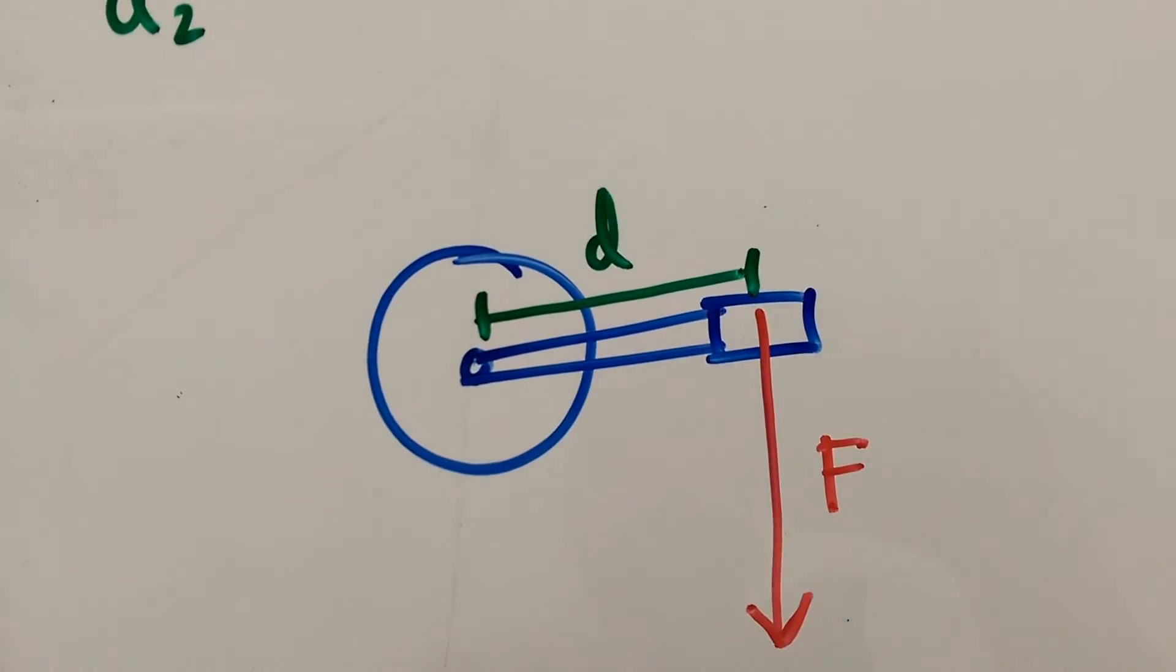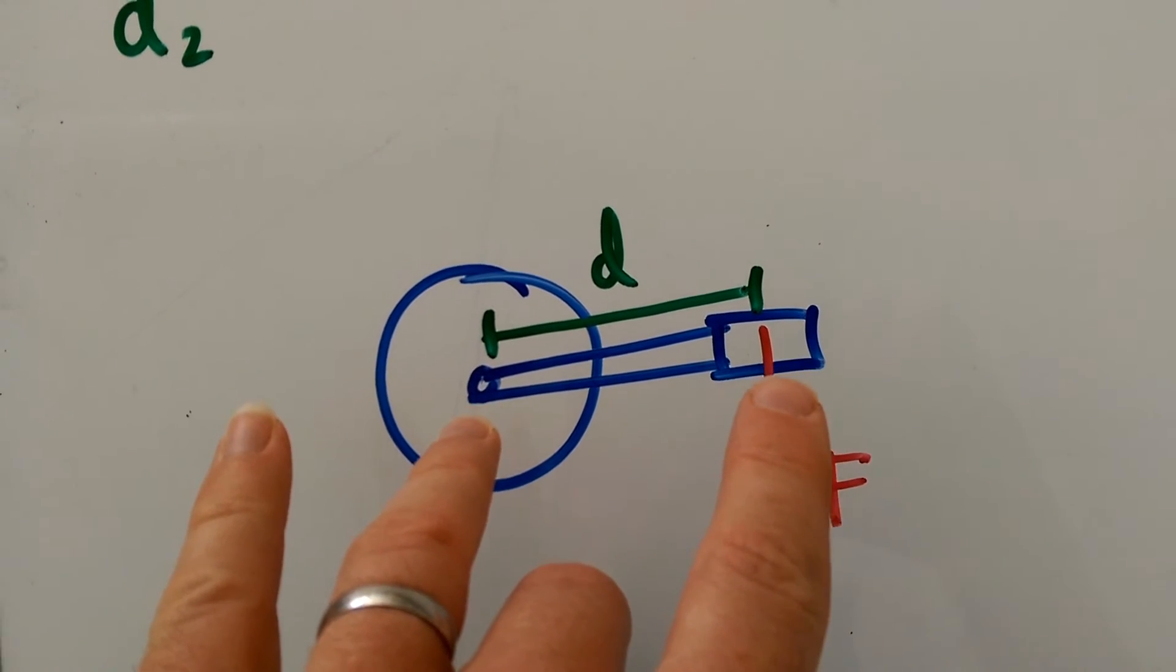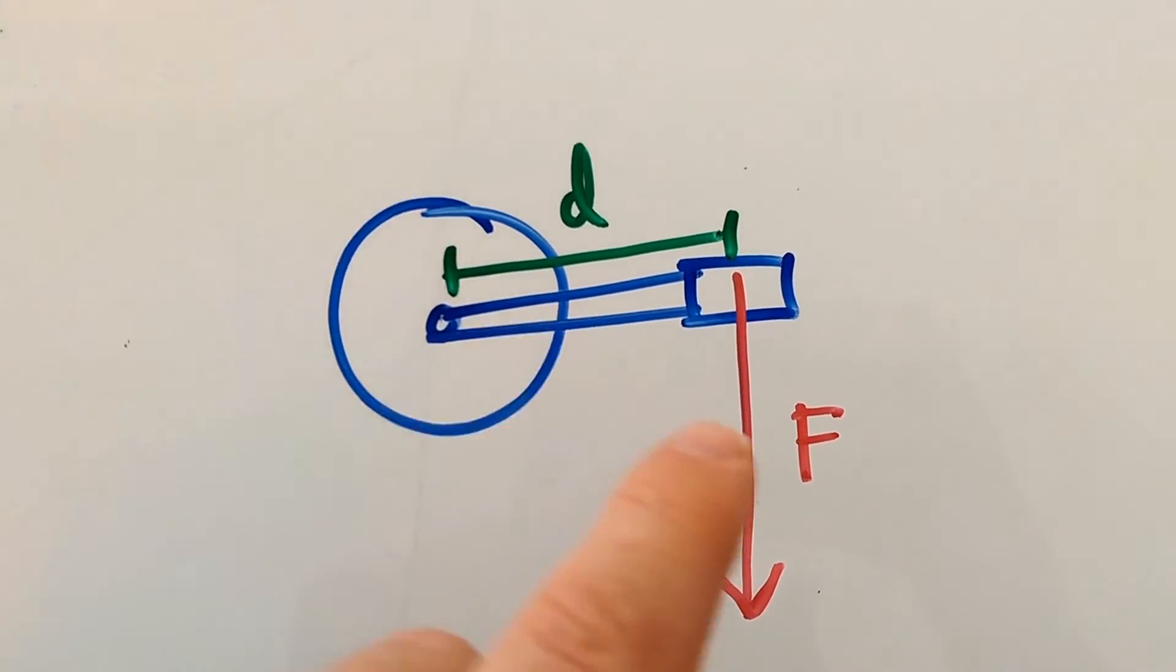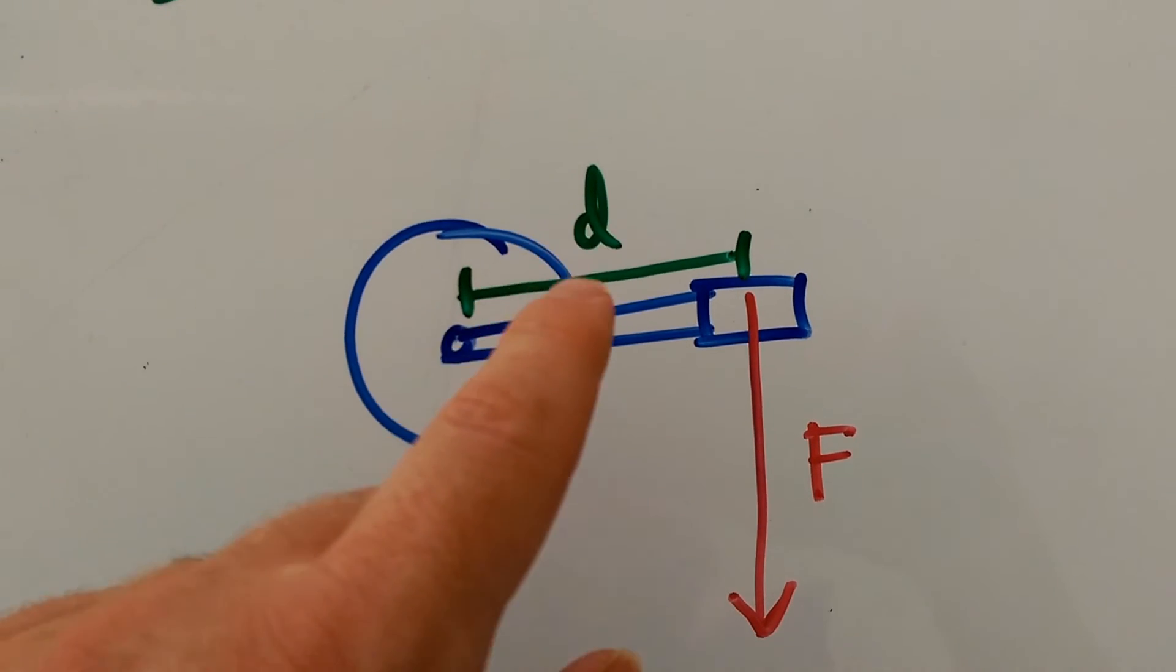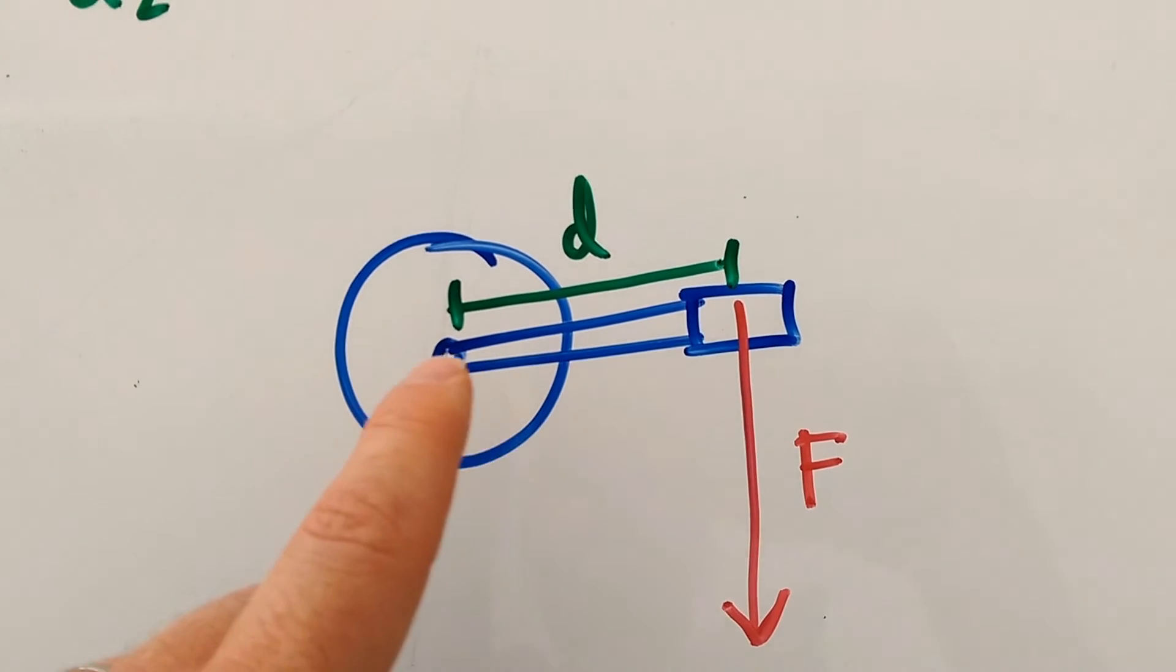The force is straight down on the pedal, and this is where the moment is going to be greatest, because a moment uses a force times a perpendicular distance from the line of action of that force to the pivot.